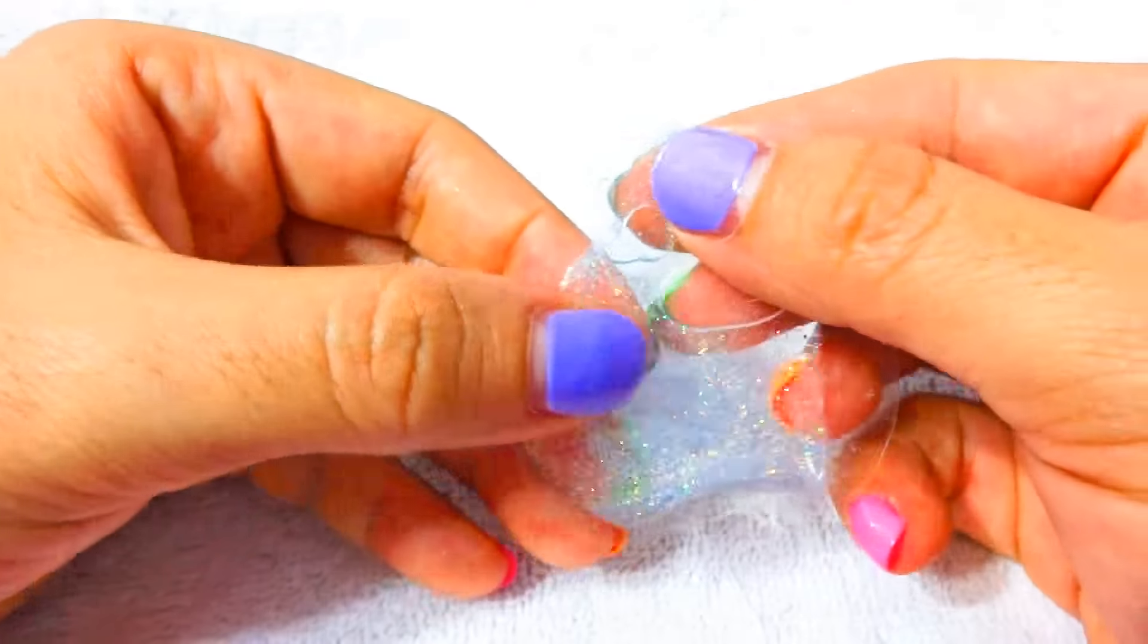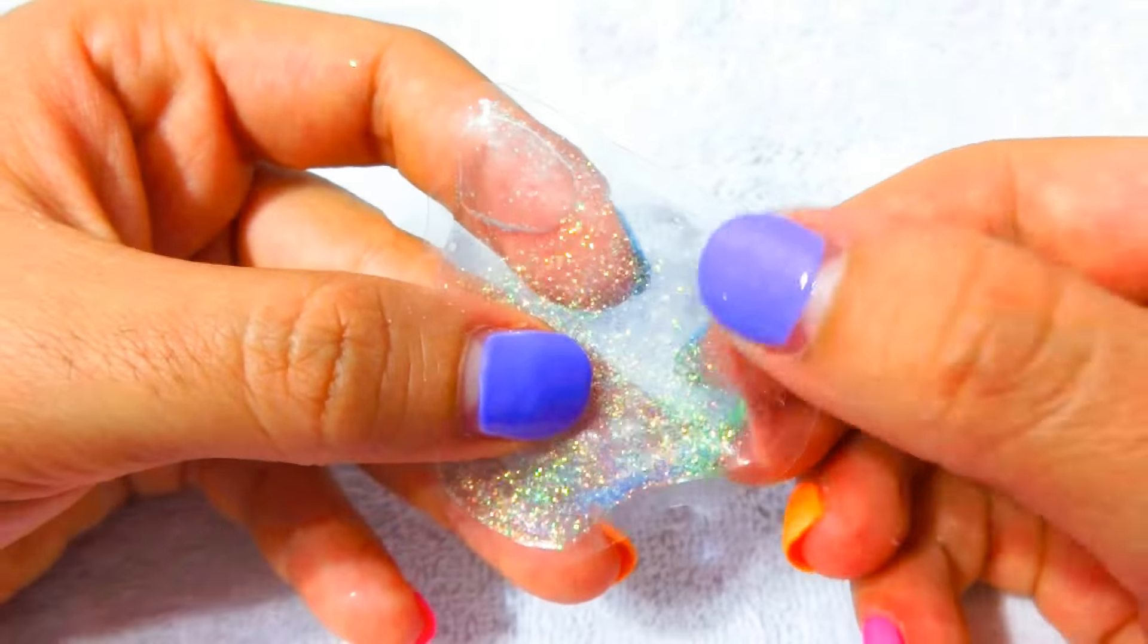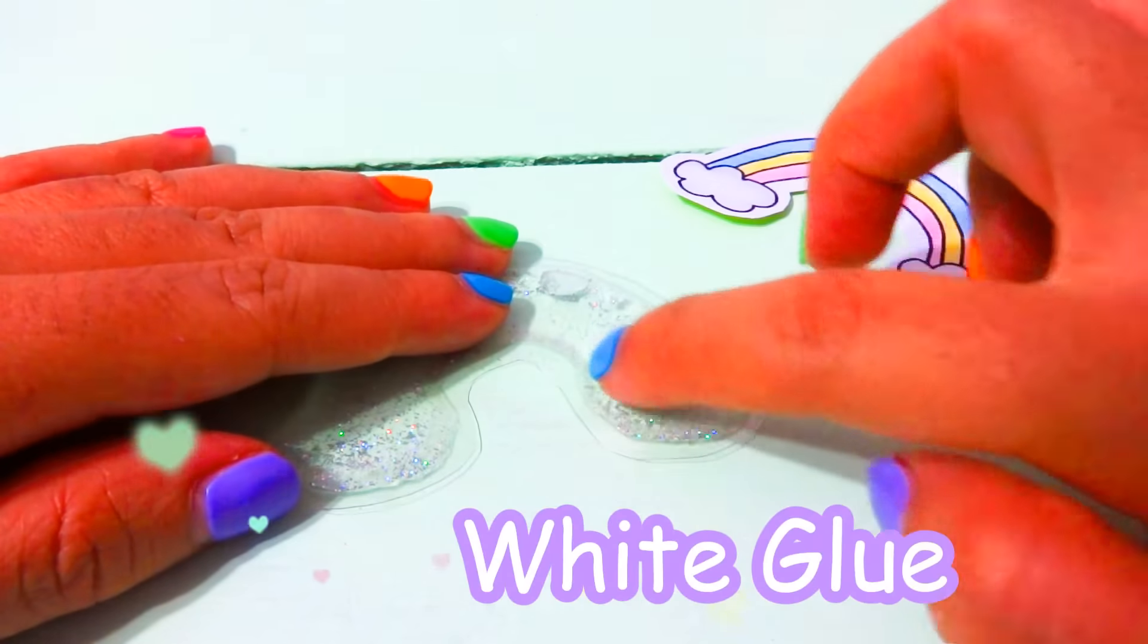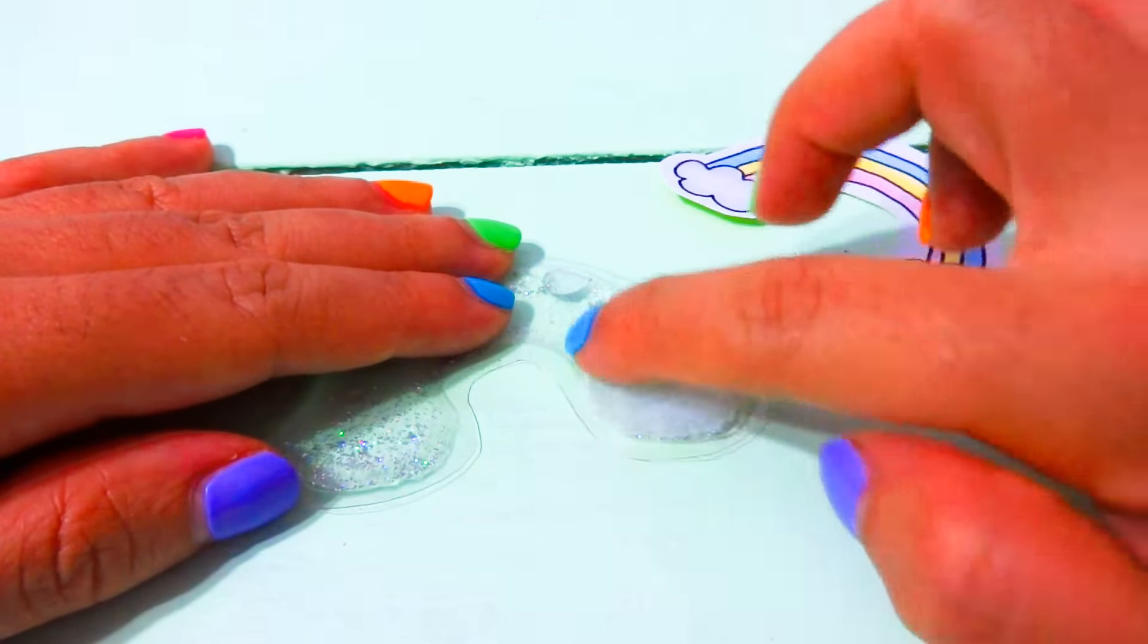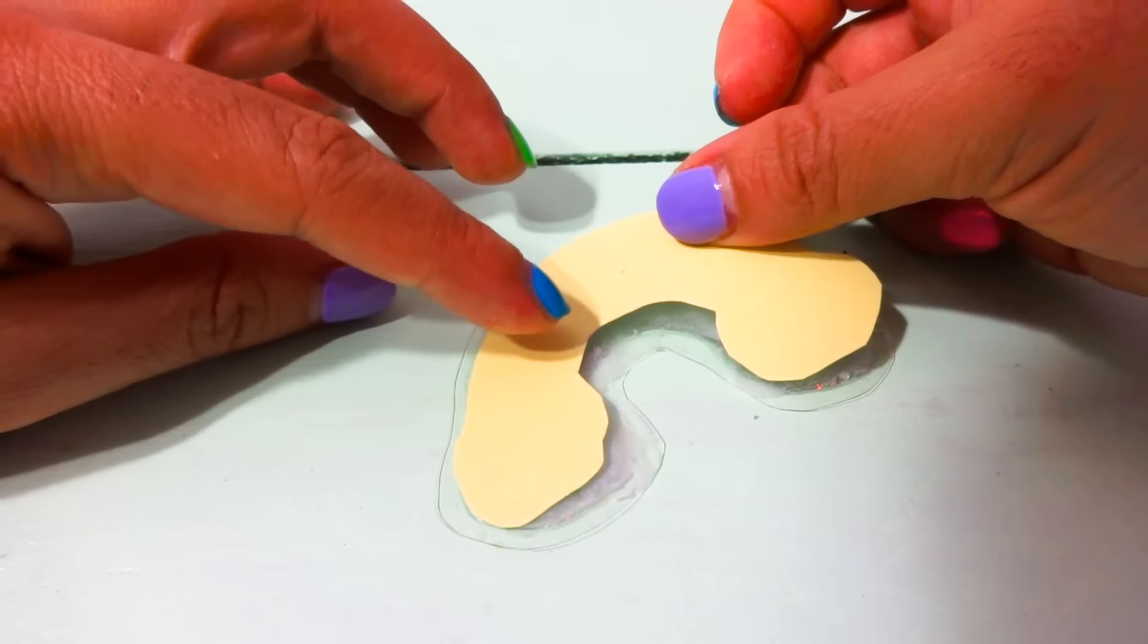This is how it turned out. Depending on how much you iron the corner, that's how much it's going to close. Then with some white school glue, I painted the back and pressed my sticker on top.